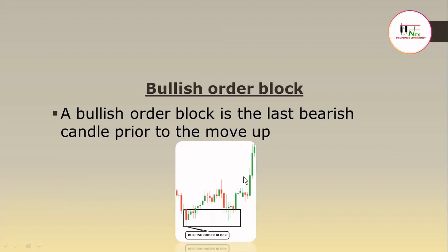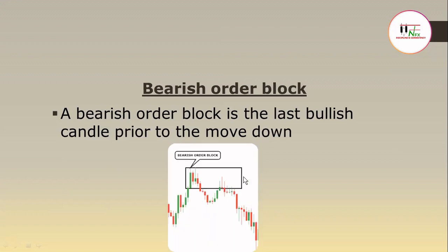After retracing, price moved higher. And a bearish order block is the opposite of the bullish order block — it's the last bullish candle prior to the move down. As you can see, this is the last bullish candle prior to this move down. So after breaking this fractal low, price retraced back to the order block and continued lower.